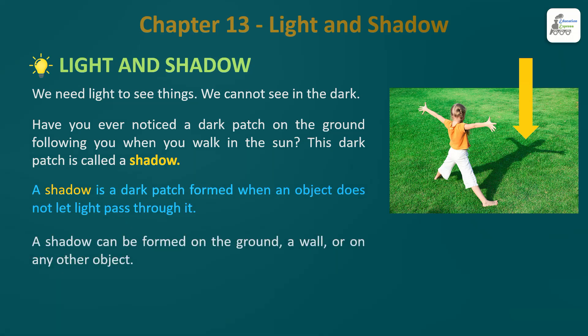A shadow can be formed on the ground - ground pe bhi form ho sakti hai - wall pe bhi fall ho sakti hai, matlab apni deewar jo hoti hai. Or any other object - koi bhi object raha na uspe bhi shadow pad sakti hai. Matlab mera face bhi - face pe bhi shadow pad sakti hai. Ghar ki jo tiles hoti hain, tiles pe bhi shadow pad sakti hai. Ya phir fan ke upar light raha toh fan ka bhi shadow deewar pe padta hai. Alag alag jagah pe shadows gir sakti hain - sirf ground pe hi nahi, alag alag jagah pe form ho sakti hai.